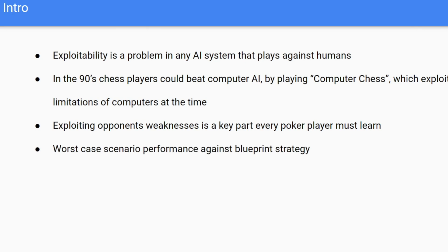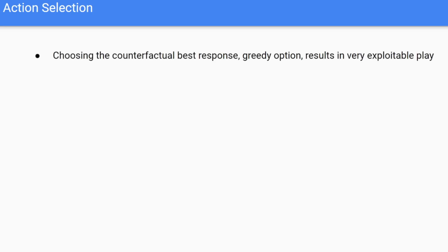We can calculate exploitability by looking at the worst-case scenario versus our blueprint strategy. The first thing we'll cover is action selection. Choosing the counterfactual best response or the greedy option might seem like a good idea, but it's actually the most exploitable thing we can do.